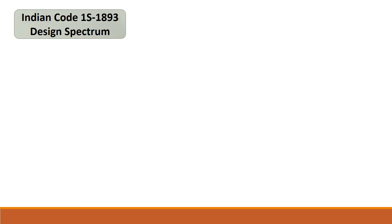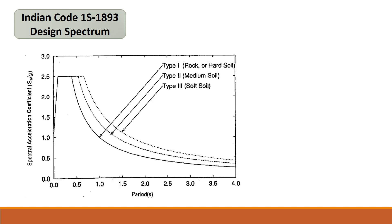The Indian design code for earthquake resistant design is IS 1893. The design spectra has more resemblance to the US codal spectra. This curve is given for different soils — there are three curves for soft soil, medium soil, and rocky soil. The curves are valid for 5% damping. The maximum spectral acceleration is for soft soil, and rocky soil has the least spectral acceleration.